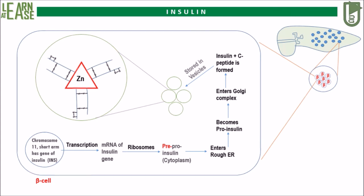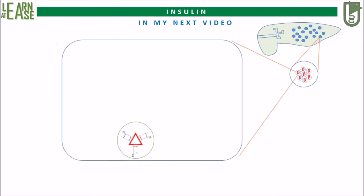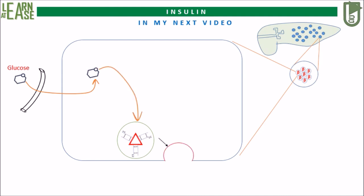Briefly, when glucose concentration in blood is spiked by assimilation of sugars from food, it enters inside the beta cells and drives a mechanism which will ultimately cause the fusion of the vesicle containing insulin with the cell membrane, and cause its release into the blood.